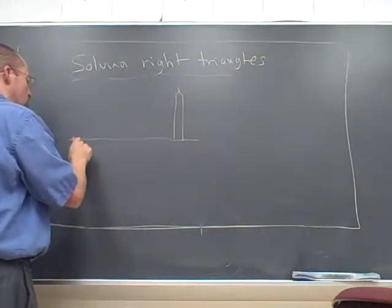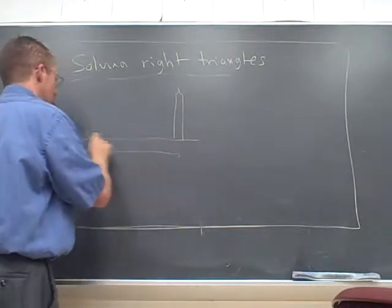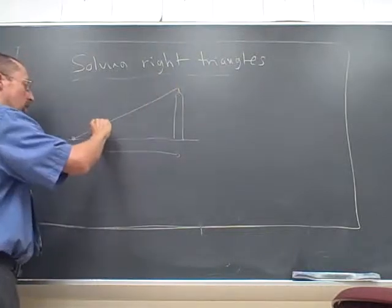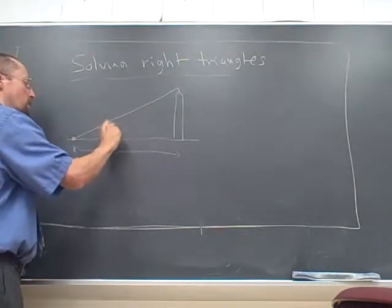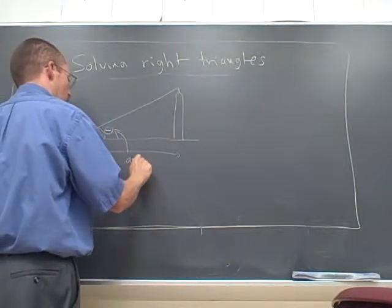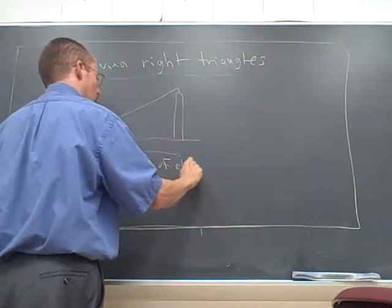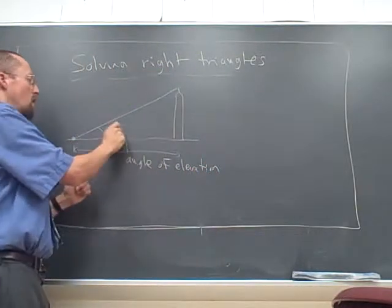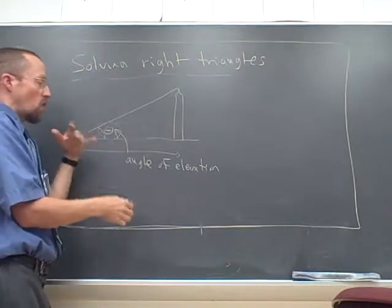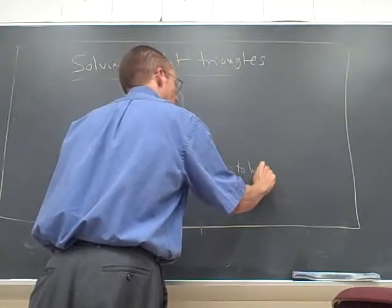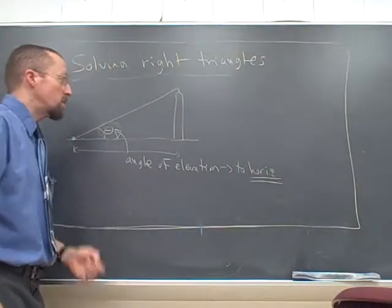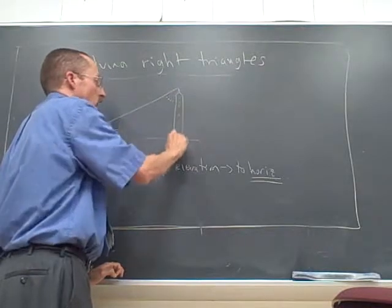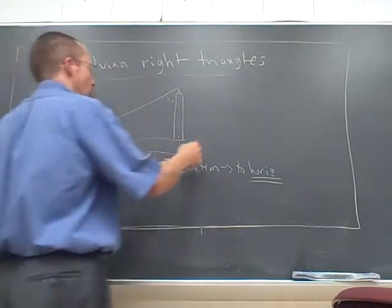And it says the angle of elevation - somebody's off at a fixed distance from it. It says the angle of elevation from this person looking at the top is a certain amount. That just means if I'm looking at something and it is above the horizontal to me, that angle is called the angle of elevation. It's always measured compared to the horizontal.